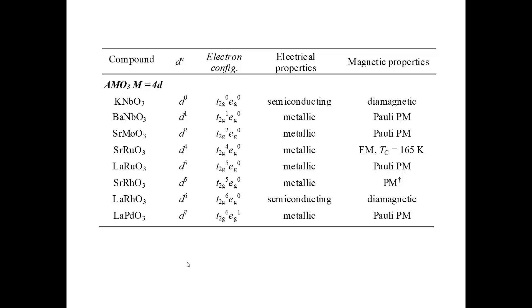If we go down to the 4D transition metals, the second time through the transition metal series, we see metallic behavior almost across the board except when we have no electrons in the D orbitals, like in KNbO3, or when we get to lanthanum rhodium O3 where we have six electrons in the D orbitals. Six electrons is enough to fill up the T2G orbitals, leave the EG orbitals empty, and in that compound we get a diamagnetic semiconductor.